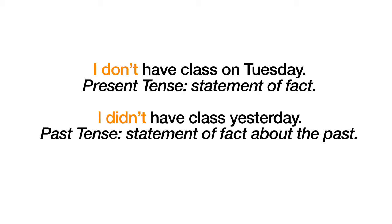'I don't have class on Tuesday' — present tense, statement of fact. 'I didn't have class yesterday' — this is the past tense, statement of fact about the past. 'I don't have class on Tuesday. I didn't have class yesterday.'